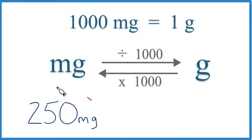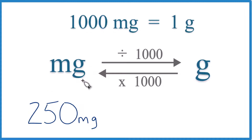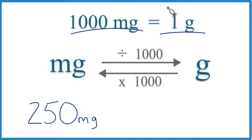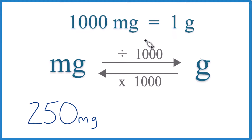If you need to convert 250 milligrams to grams, here's how you can do that. So 1,000 milligrams equals 1 gram, or you could say 1 gram equals 1,000 milligrams. And that's what we call a conversion factor. We need that when we're going from milligrams to grams or grams to milligrams.